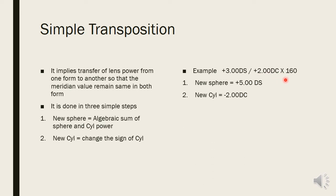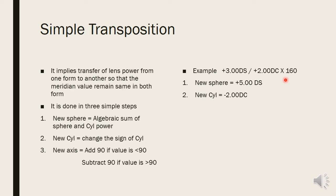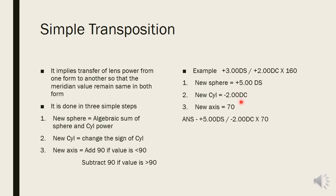Step three: determine the new axis. If the axis is less than 90 degrees, add 90; if more than 90 degrees, subtract 90. In this example, the axis is 160 degrees — more than 90 — so 160 minus 90 = 70 degrees. The new prescription is therefore plus five diopters spherical with minus two diopters cylinder at 70 degrees.